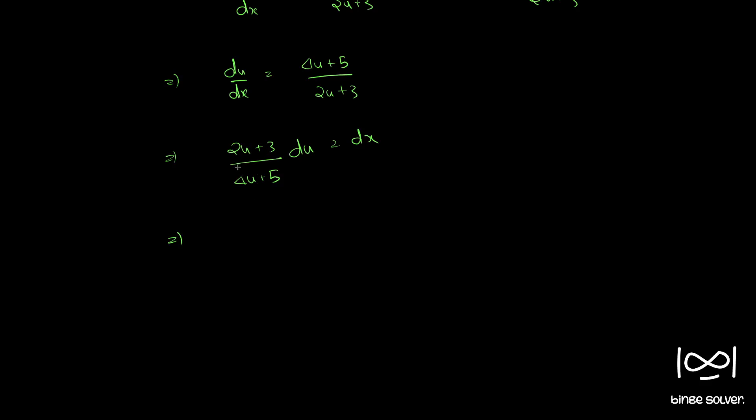Now we can write this as 1 by 2 into 4u plus 5, which gives 2u plus 5 by 2 plus 3 minus 5 by 2, all by 4u plus 5 du equal to dx.